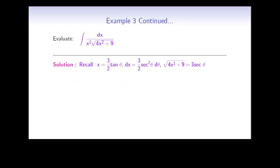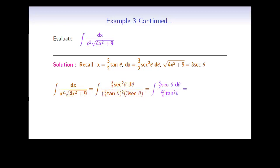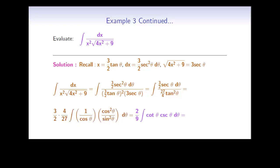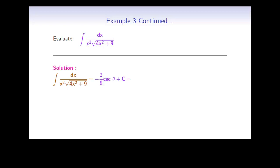We insert all the details into the original integral: dx becomes (3/2) secant² theta dθ, x becomes (3/2) tan theta, and the square root becomes 3 secant theta. We cancel one copy of secant theta, pull constants out front, and rewrite secant and tan in terms of sine and cosine. After cancellation, we get (2/9) times the integral of cotangent theta times cosecant theta dθ. The integral of cotangent theta cosecant theta is negative cosecant theta, giving us negative (2/9) cosecant theta plus C.